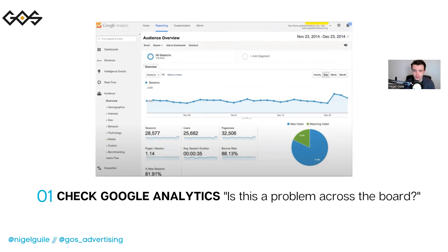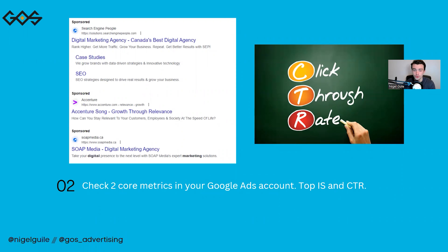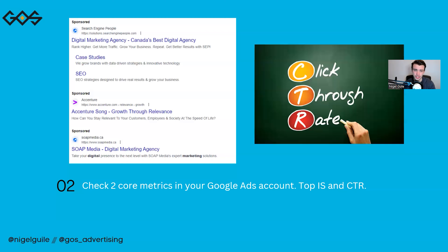Number two: you need to check these two core metrics in your Google Ads account, which are Top Impression Share and Click-Through Rate. Top Impression Share means — are your ads actually placing at the top of the page when someone searches? For example, for 'digital marketing agency,' is your ad landing in the top three? This is super important to make sure your ads are reaching as many people as possible. With Click-Through Rate, how many people viewing your ad are actually clicking on it? Nowadays we want a Click-Through Rate of above 7% and a Top Impression Share of over 50%. That means 7% of people viewing our ads are clicking, and 50% of the time our ads are placing in the top four sections of Google. Those are two huge components when you want to increase conversions.